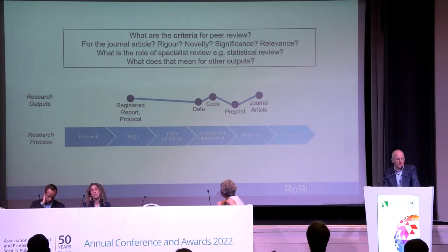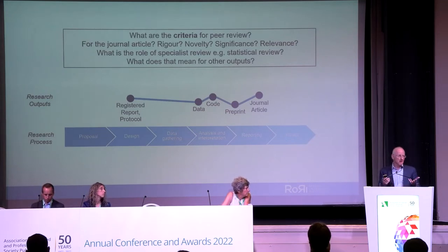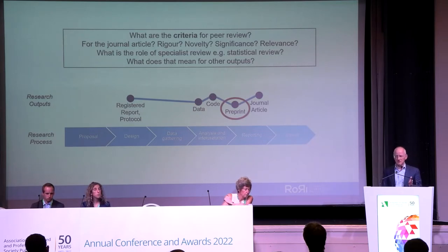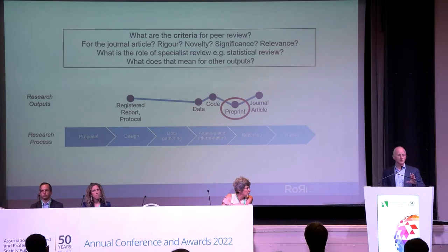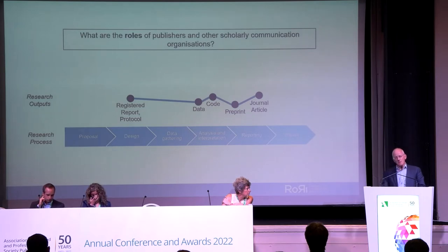An initial question is that of criteria. We're used to different criteria being associated with innovation in the peer review space. Soundness-only peer review has been with us for a number of years, and there are other innovations such as statistical peer review. Taking preprints as an example, a number of services have arisen in the last five years that are peer reviewing preprints. Should that process be similar to journal articles or lighter touch? And how can it be linked to journal peer review to create efficiency?